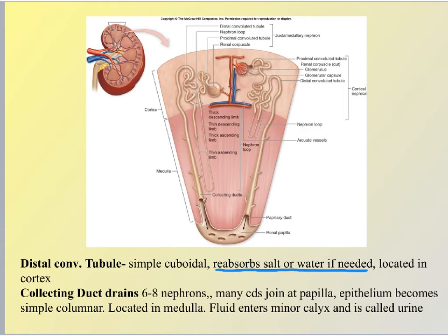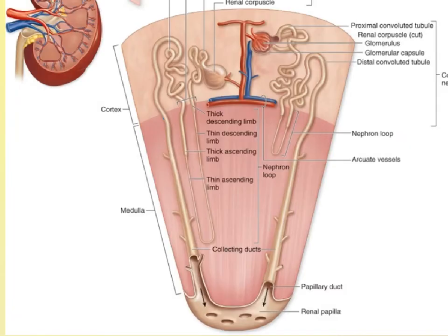From there, the filtrate is going to pass down a tube called a collecting duct. Those collecting ducts are going to drain into the region of the minor calyx — this author is calling it the renal papilla, which is the tip of the medulla. The minor calyx is the beige area right here. Before we move on and follow the filtrate from the collecting ducts, I want you to start thinking about something.